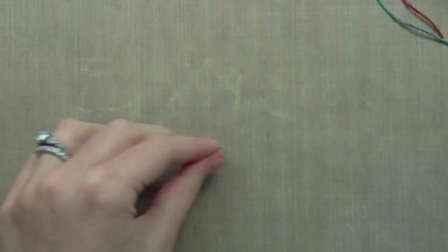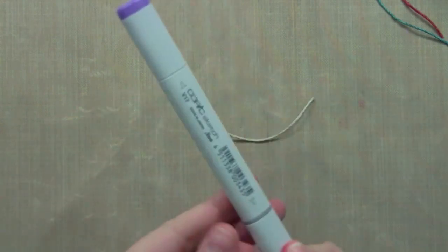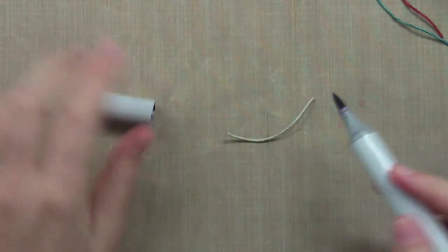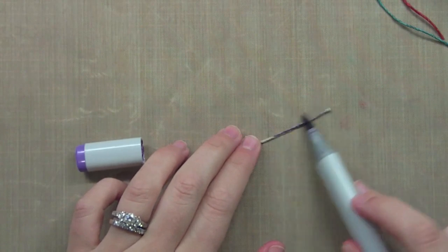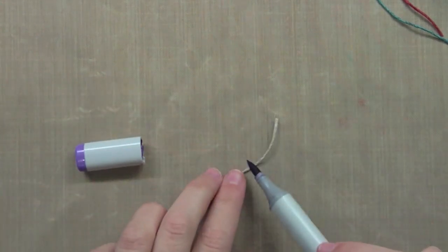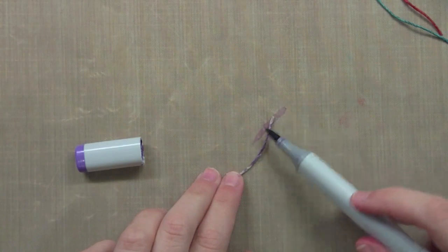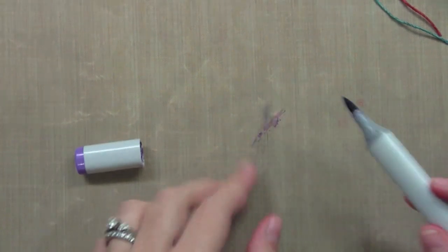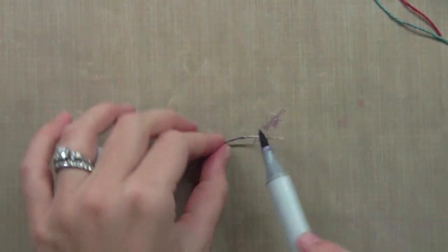So another fun thing that we can do is use a Copic marker to color them. So all you would do is just start coloring it like this. And this would work really well with a Sharpie too, because Sharpie is a permanent ink also.